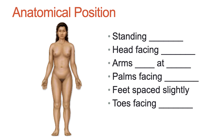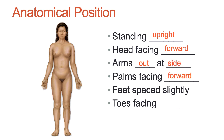Before discussing anatomical regions, let's establish anatomical position — a standardized way to refer to the body that increases precision. Think of it like a map: just as north is on top and south is on the bottom, anatomical position is a map of the body. The person is standing upright, head facing forward, arms slightly out at the side with palms facing forward, feet slightly apart, and toes facing forward. This standard position is used to reduce confusion.